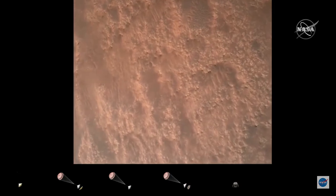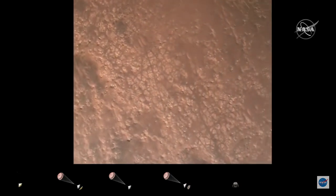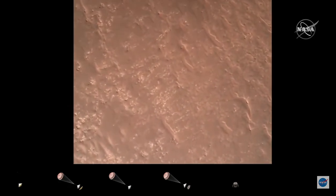We have completed our terrain relative navigation. Current speed is about 30 meters per second at an altitude of about 300 meters off the surface of Mars.